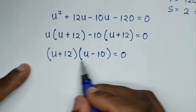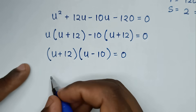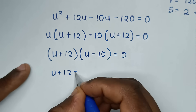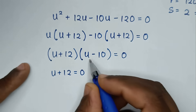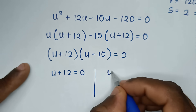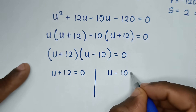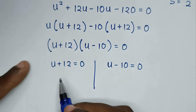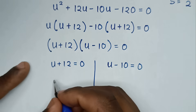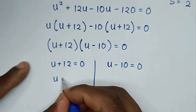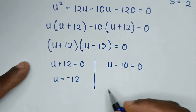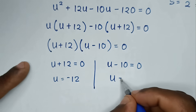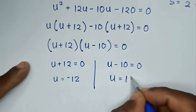This gives two solutions: u + 12 = 0, so u = -12; and u - 10 = 0, so u = 10.